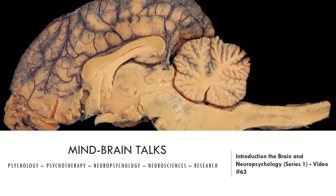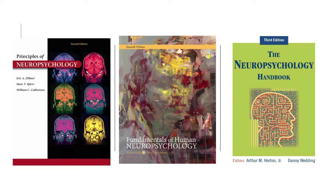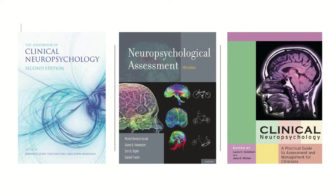Today's video concerns the brain. In this lecture, I'll show you the several major points we can use to study the brain. But first, let's see the books I recommend. The first is Principles of Neuropsychology. The second is the seventh edition of Fundamentals of Neuropsychology from Brian Kolb and Ian Whishaw. The third is the third edition of the Neuropsychology Handbook. The fourth is the Handbook of Clinical Neuropsychology, second edition. The fifth is Neuropsychological Assessment from Lezac. And the sixth is Clinical Neuropsychology from Laura Goldstein and Jane McNeil.